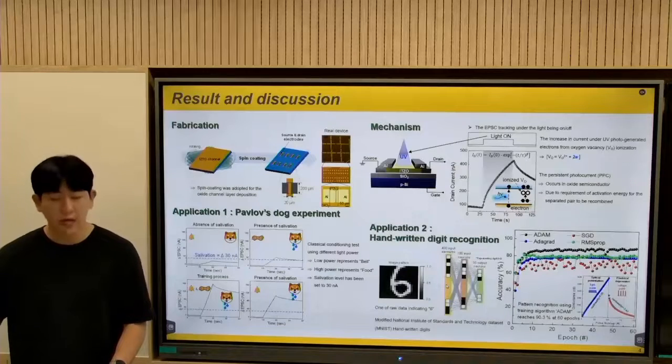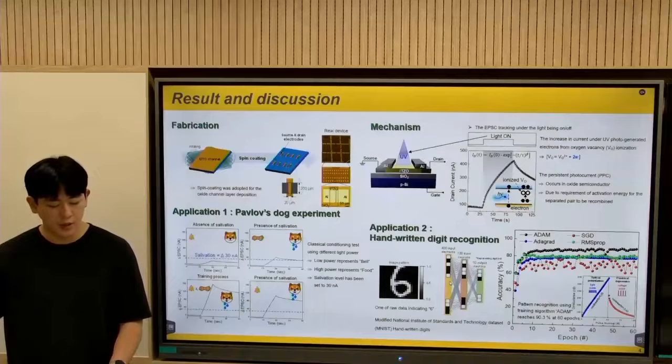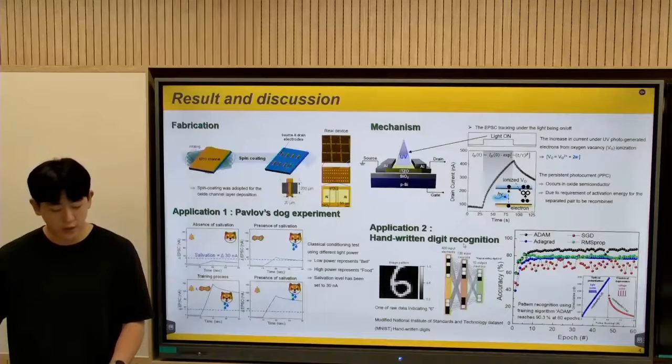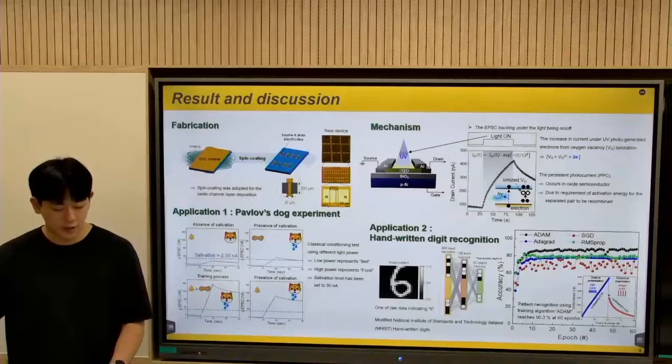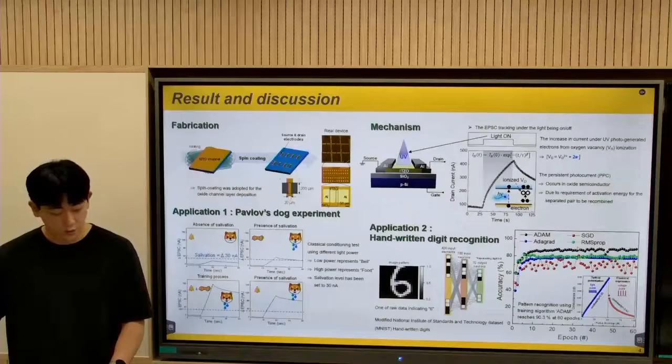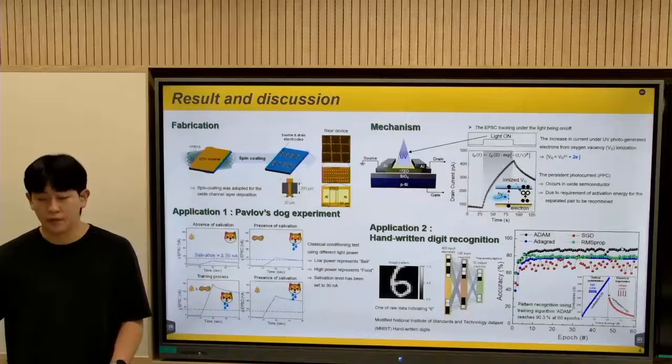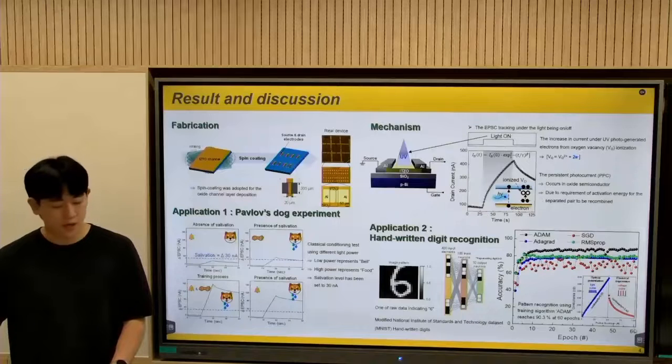The other application conducted by the artificial synapse using light was MNIST handwritten digit recognition. Here, the pattern recognition accuracy using algorithm Adam, which is 90% approximately at 60 epochs.